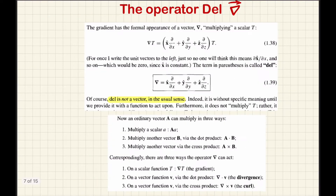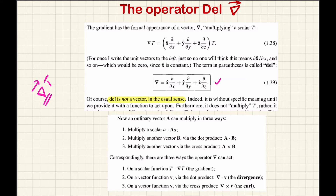Next we move on to the del operator. The gradient of a scalar function t is written as shown. The del operator is a special quantity which we can define in the Cartesian coordinate system. It is a vector operator defined as: x-cap times ∂/∂x + y-cap times ∂/∂y + z-cap times ∂/∂z.